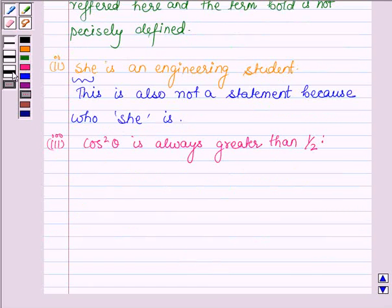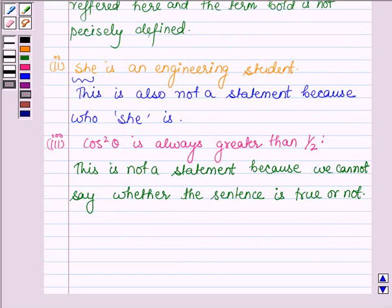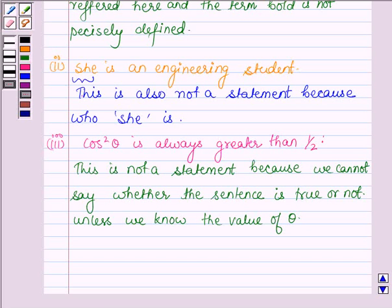this is not a statement. Thus, the reason is we do not know the value of θ and thus we cannot say whether the value of cos²θ is always greater than ½ or not.